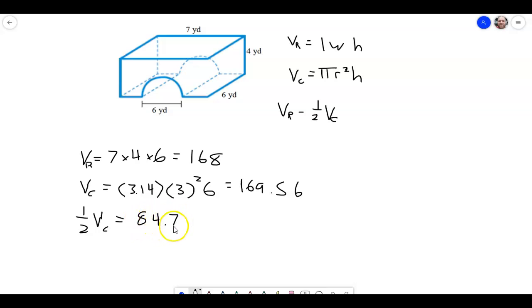84.78. So our final answer is this here, that's the volume of our rectangular prism, minus half of the volume of the cylinder there.